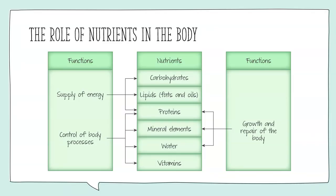Nutrients in the body have two main roles: they can supply energy or control body processes. Our macronutrients — carbs, lipids, and proteins — tend to break down into energy, while proteins also allow for growth and repair of the body. Largely, whatever we're taking in will play one of these two roles: supplying energy or taking part in growth, repair, or standard bodily processes.